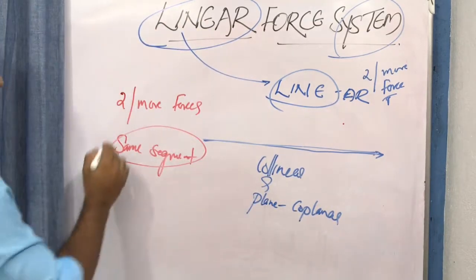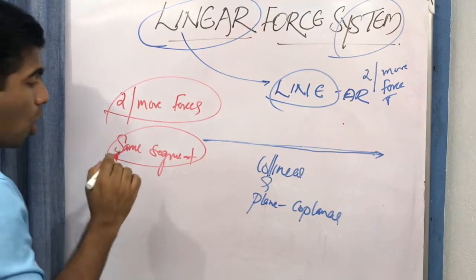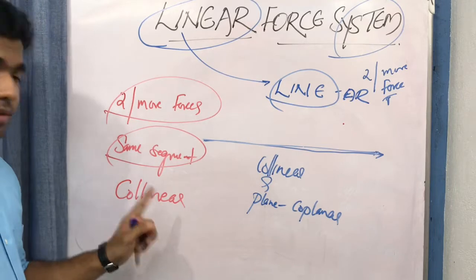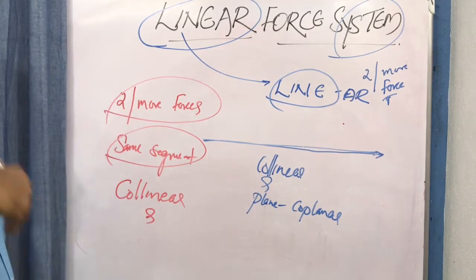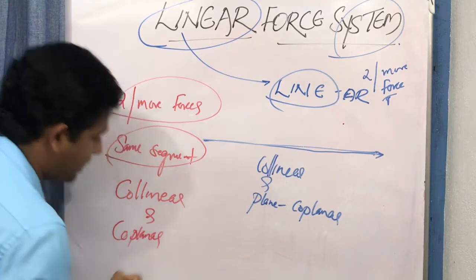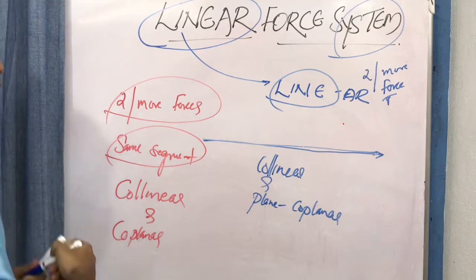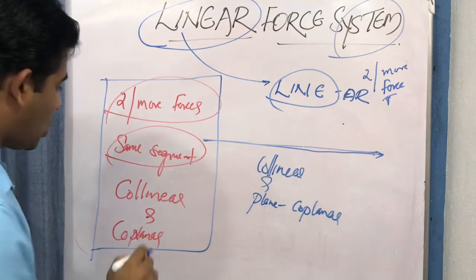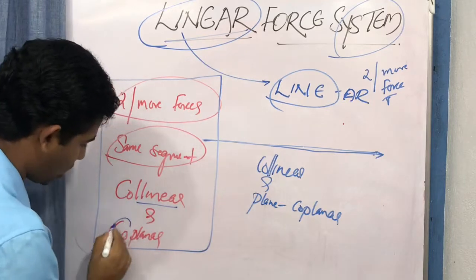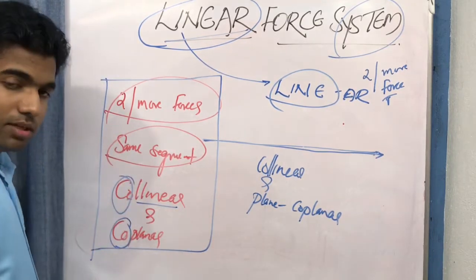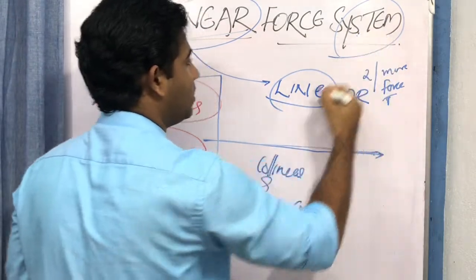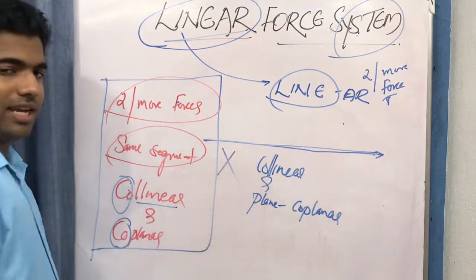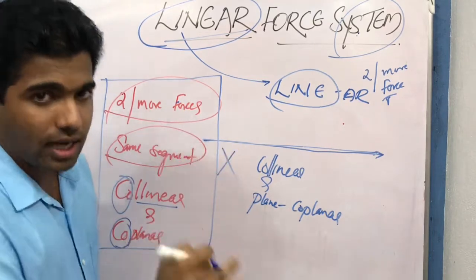So when two or more forces act on the same segment, are in the same line (collinear), and are in the same plane (coplanar), then those forces are considered to be a part of the linear force system. Remember, it won't be one force — a single force acting is just a force, not a force system. It must be two or more forces acting to be collinear and coplanar.